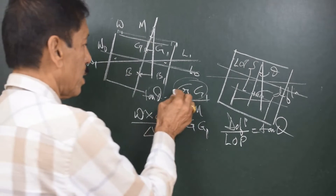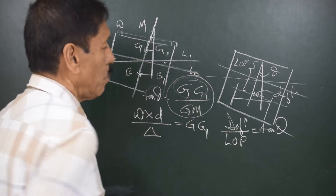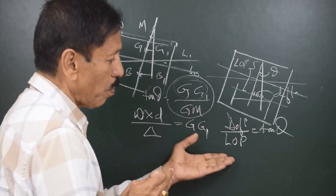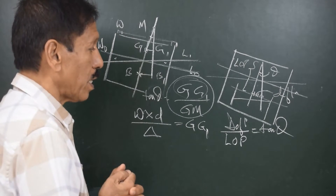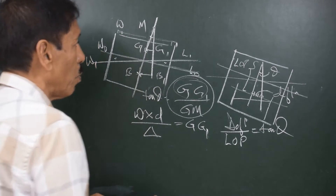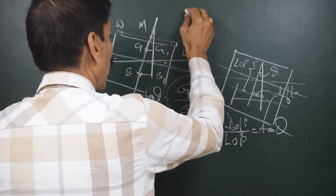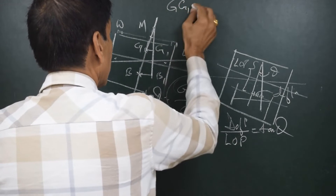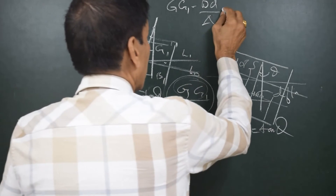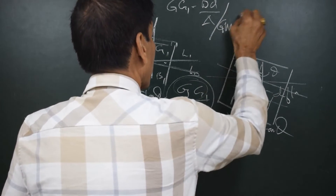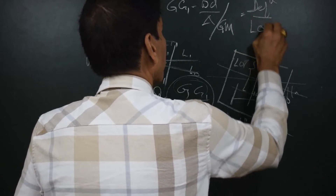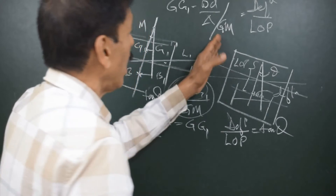When we equate GG1/GM = tan theta with deflection/LOP = tan theta, then we get GG1/GM = deflection/LOP. This means we can rearrange to find GM.